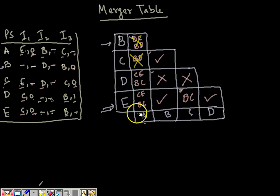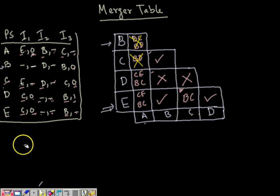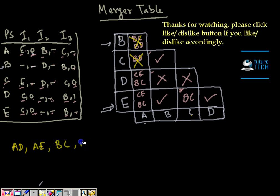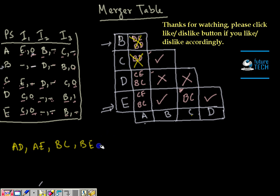So the final list of compatible pairs is: A-B — not compatible; A-C — not compatible; A-D — compatible; A-E — compatible; B-C — compatible; B-D — not compatible; B-E — compatible; C-D — not compatible; C-E — compatible; D-E — compatible.